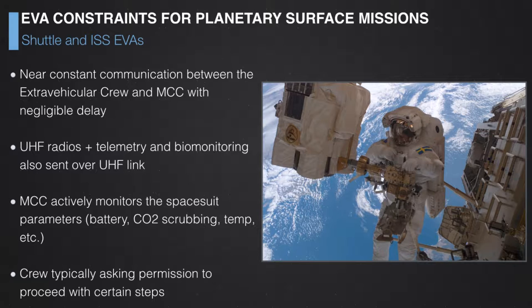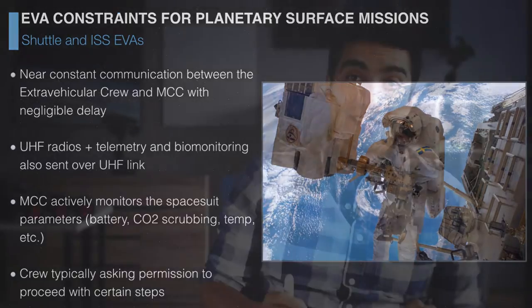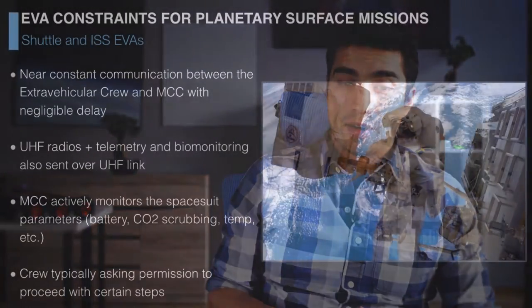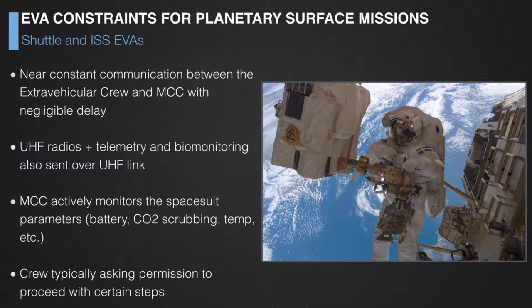UHF radios handle communications and telemetry sent over the UHF link to Earth. All telemetry is continuously monitored by a team of flight controllers who track oxygen levels, battery levels, CO2 removal status, and temperature. The astronaut is really busy with the task at hand, so not a lot of information needs to be conveyed in the suit because it is being monitored by Earth. The crew also typically asks permission to proceed with certain steps in the EVA.